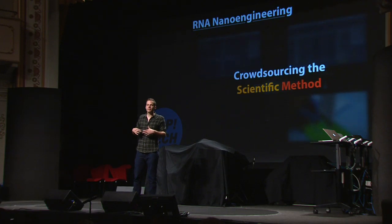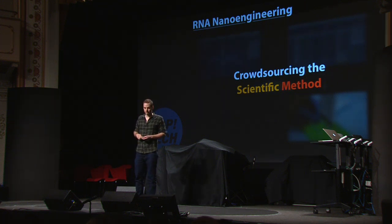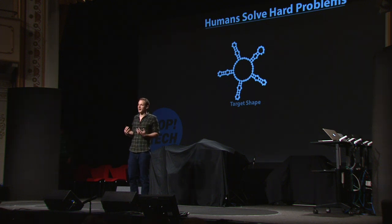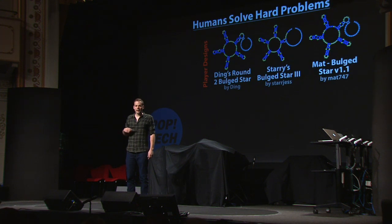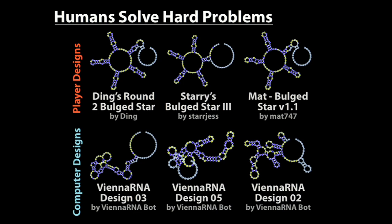As you can see, we've crowd-sourced the entire scientific method, from hypothesis through experiments to results. Why would we engage tens of thousands of people in these kinds of problems? Well, it turns out they're fantastic at it. This is an example of a target shape which doesn't exist in nature — we call it a bulge star — that we gave to our players. These are actual experimental results of RNAs designed by Eterna players. We gave the same problem to the top computer program in the field, and — not as good.